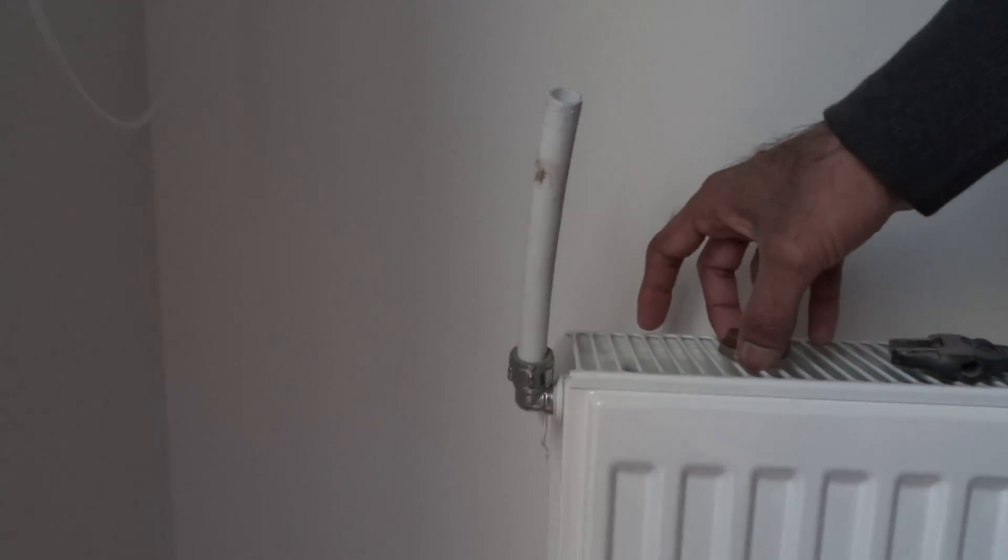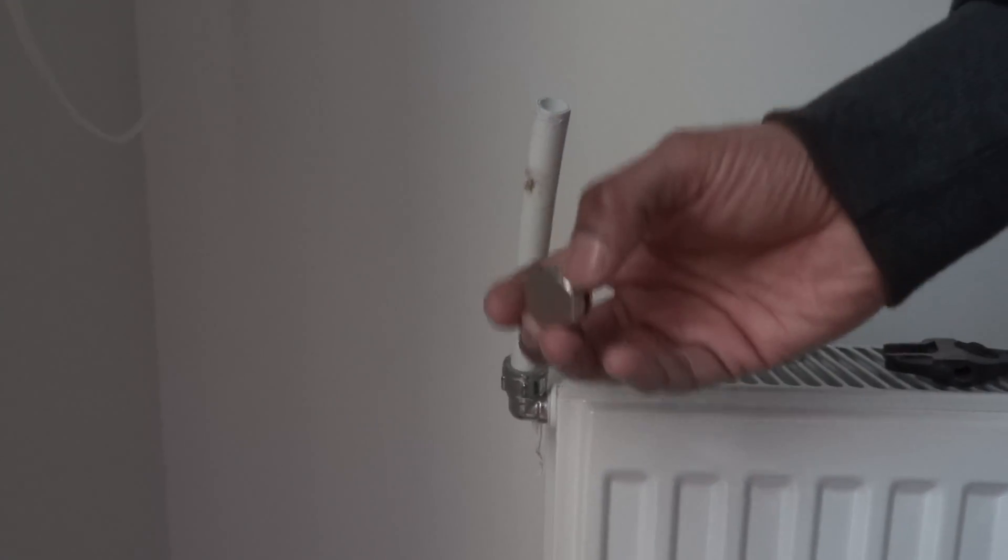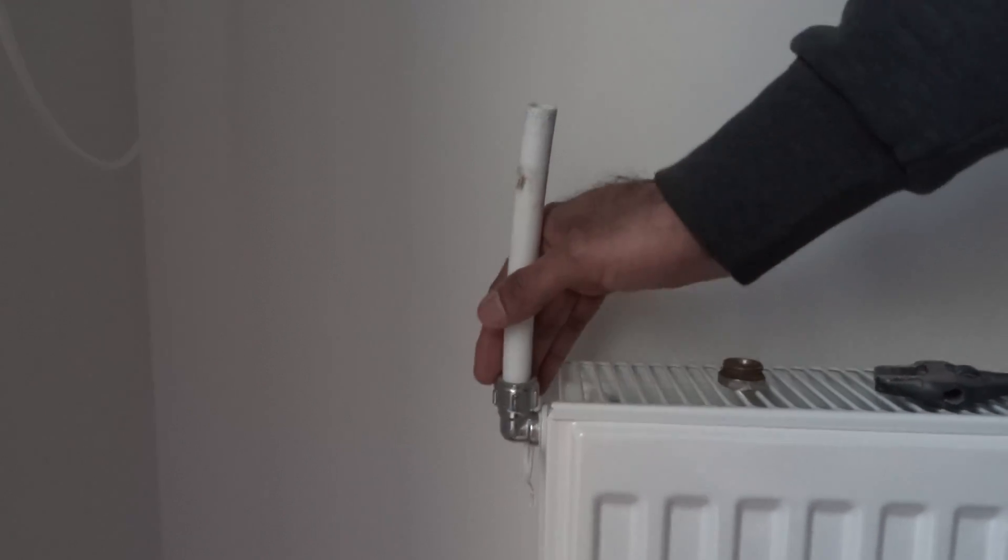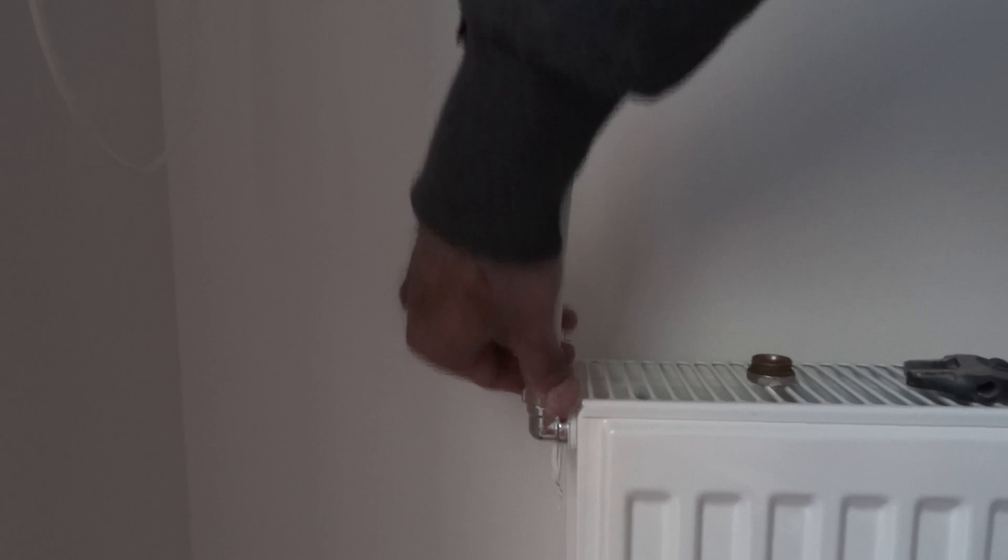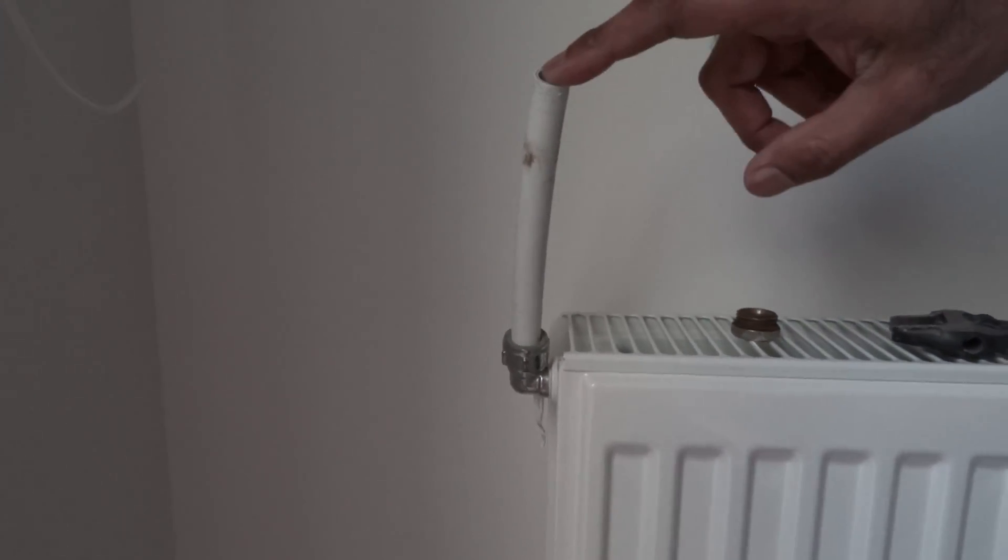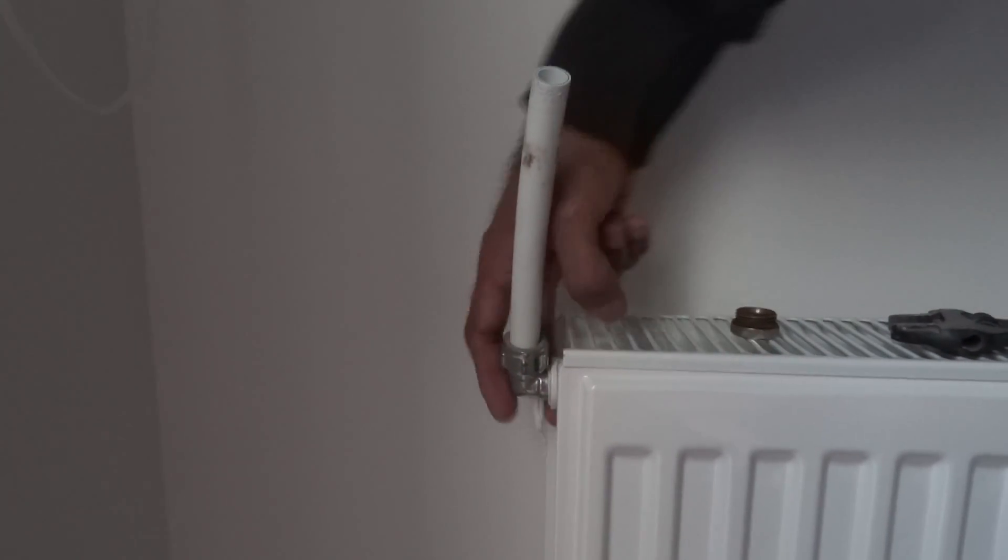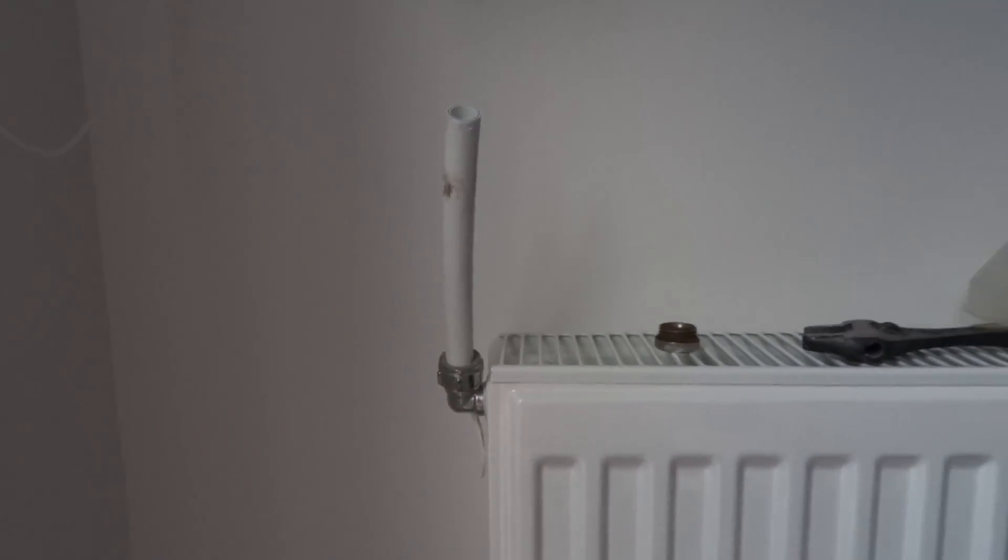So I thought I'd just top up the inhibitor. I've taken the end cap off and I found an elbow joint. I had an old one and I've just attached a bit of plastic piping onto it. So it screws straight on and what I've done is just put a bit of PTFE tape on there.